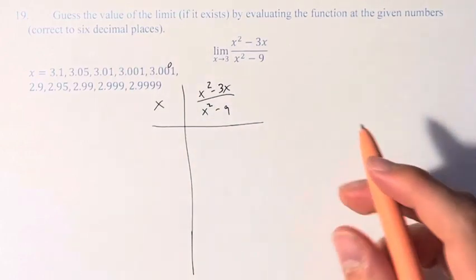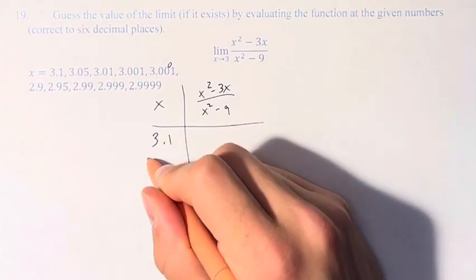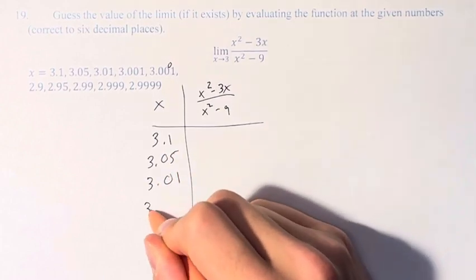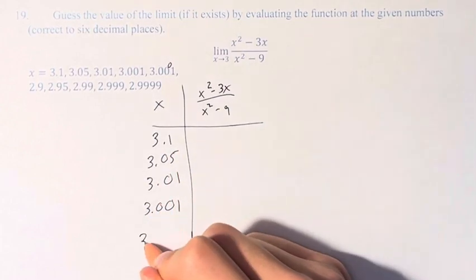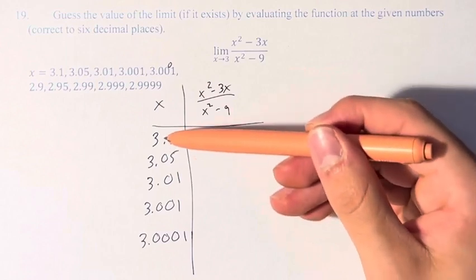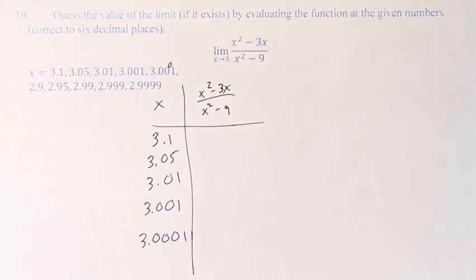for these values, 3.1, 3.05, 3.01, 3.001, and 3.0001, right? This is approaching 3 from the right, from values that are greater than 3.